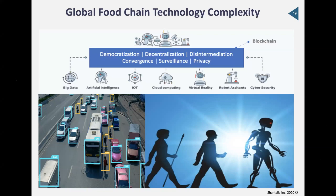On technology complexity, there's democratization — getting technology to more users; billion-dollar companies using $50-a-month software and doing amazing things. We're talking about decentralization, disintermediation — taking out the middleman — and convergence of technologies as we move toward Society 5.0. But we have risks of mass surveillance and privacy breaches. For the sake of this session, I'm going to focus on blockchain and look at it from different angles.